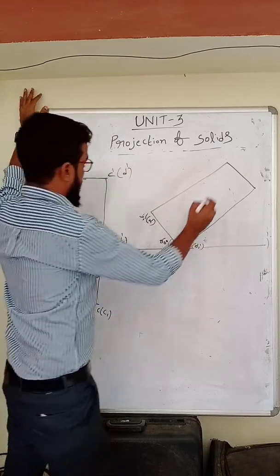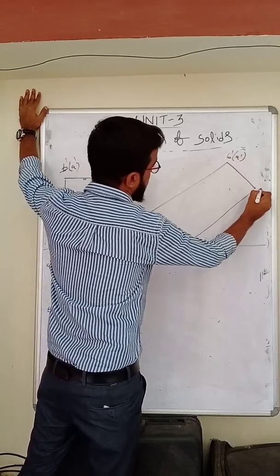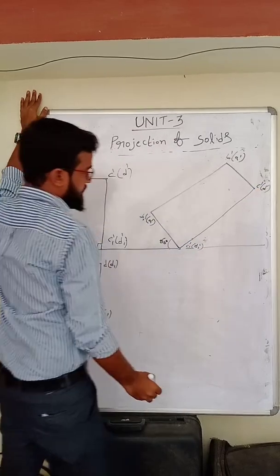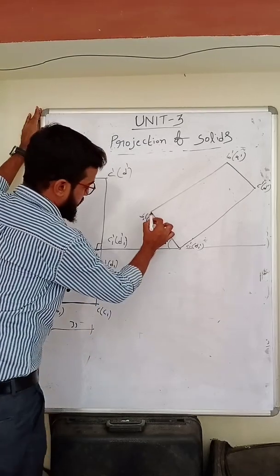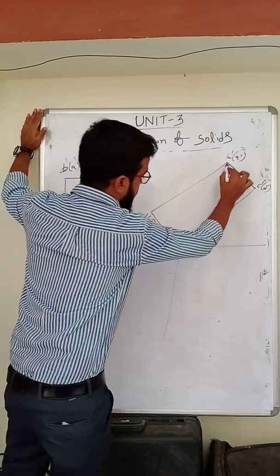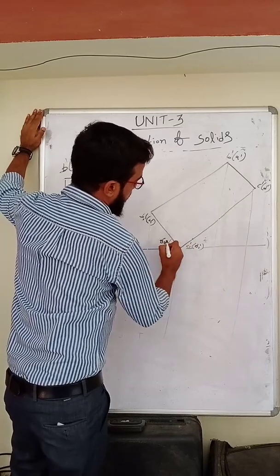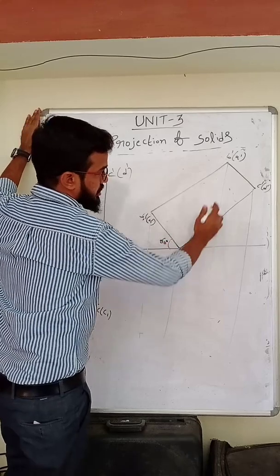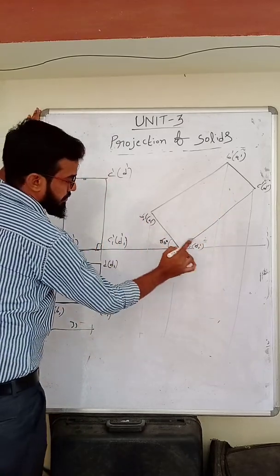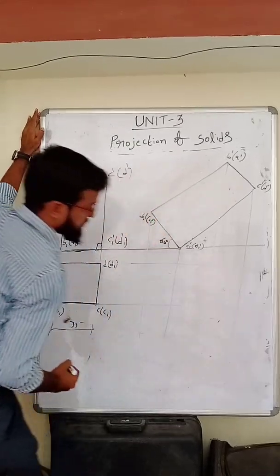Also label here: B' (brackets A'), C' (brackets D'). So there are two positions. Now project all these corner points downward.